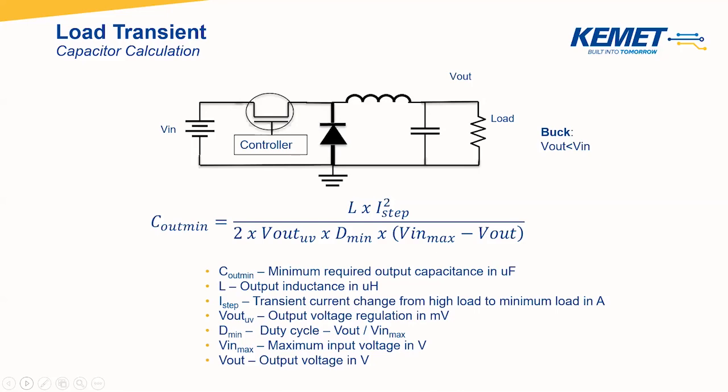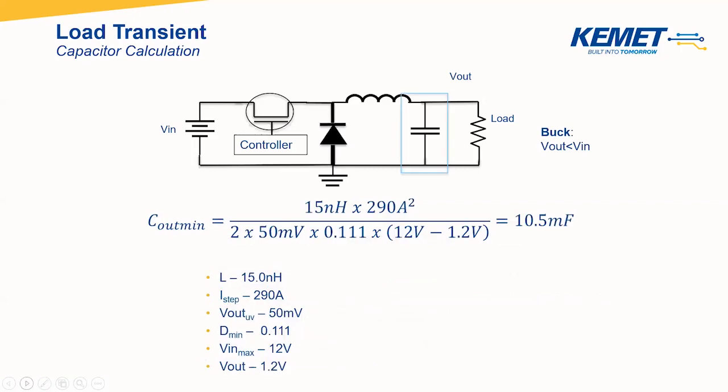The output capacitance required to maintain this voltage is calculated using an equation of all known parameters. For example, with a 50 nanohenry inductor, a transient current change of about 290 amps, output voltage regulation of about 50 millivolts, a duty cycle of about 0.11, and voltages of 12 volt input and 1.2 volt output, this gives a minimum output capacitance of 10.5 millifarads. Due to the high nature of this capacitance, you're talking about a bank of multiple capacitors. We'll discuss how to get that value and compare it to the value when ESR is taken into consideration.